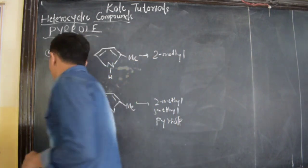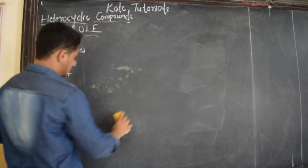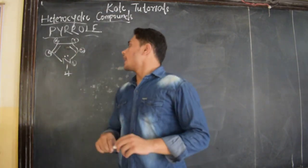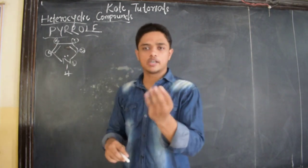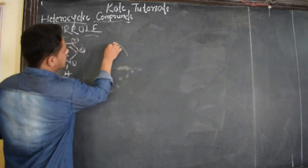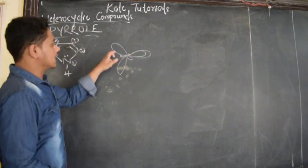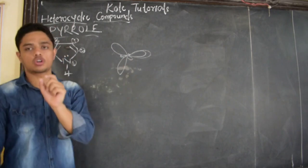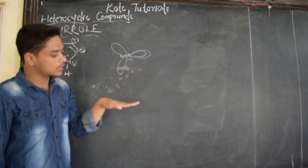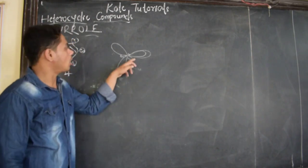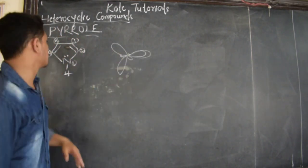Now we need to discuss about the orbital structure of Pyrrole. This is very important. All four carbons in Pyrrole are sp2 hybridized. sp2 hybridized means they will be trigonal planar, with all bond angles at 120 degrees. The sp2 hybridized orbitals have big lobes and small lobes, lying in a single plane.